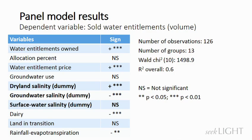On the other hand, groundwater salinity was negatively associated with water entitlement sales. This provides some evidence on the substitutability of groundwater and surface water, which was also found in previous studies. We think that this result needs some further investigation to understand the relationship between surface water and groundwater and also to understand the overall water withdrawals in the Murray-Darling Basin.